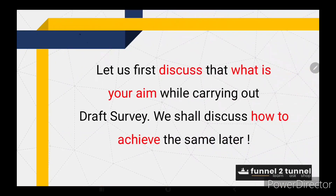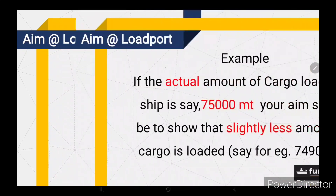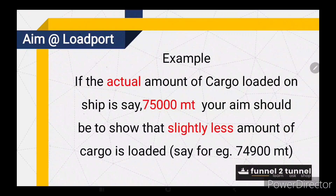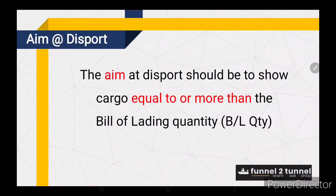Let us first discuss what your aim is while carrying out a draft survey. Aim at the load port: your aim at the loading port should be to show slightly less amount of cargo loaded on the ship than actual. For example, if the actual amount of cargo loaded is 75,000 metric tons, your aim should be to show slightly less, say 74,900 metric tons. This difference of 100 tons is cargo saved in your pocket, which you will be showing at the discharging port. So the cargo discharged will be slightly more than the bill of lading figure, but not less.